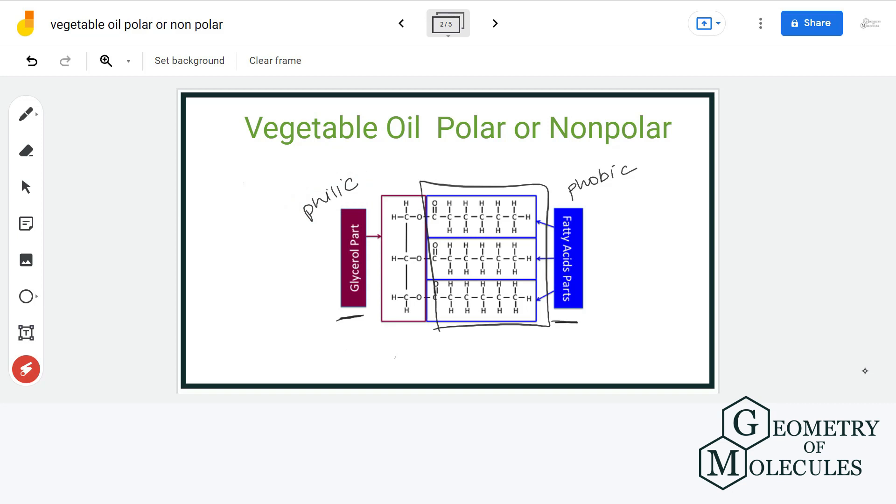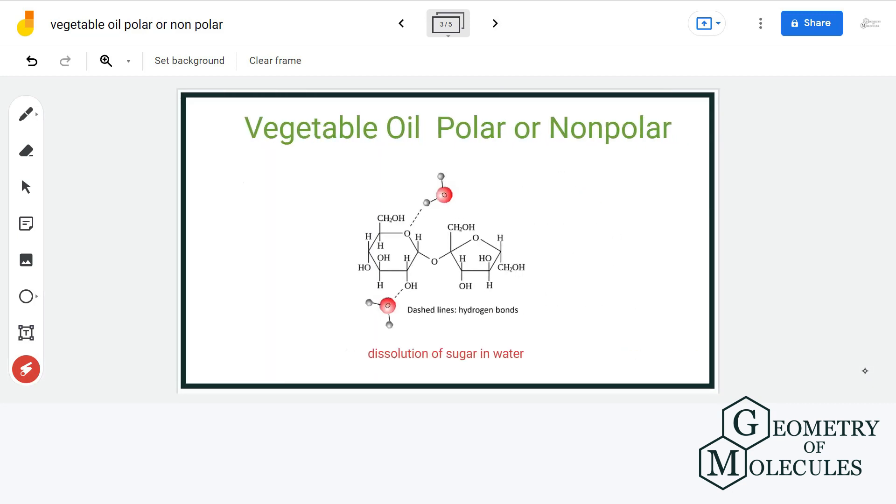So, let us take an example of sugar that dissolves so quickly in water. Now, sugar gets completely dissolved in water and that is because it has many polar hydroxyl groups.